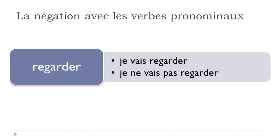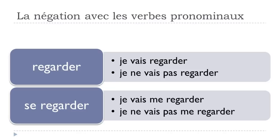For the FUTUR PROCHE, remember it is a fake future because you are using the verb ALLER to go. So JE VAIS REGARDER — in English, I am going to watch. It's quite interesting because you've got two verbs. Remember that when you put the negative form, JE NE goes before ALLER, and then PAS right after ALLER: JE NE VAIS PAS REGARDER.